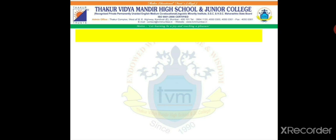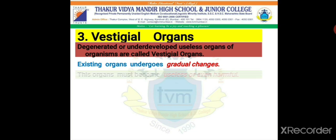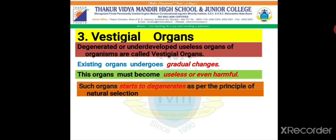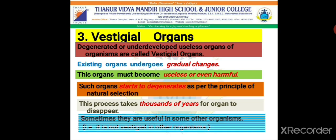The third proof is regarding vestigial organs. What are vestigial organs? Degenerated or underdeveloped, useless organs of organisms are called vestigial organs. These are existing organs which undergo gradual changes — they become useless or even harmful. Such organs start to degenerate as per the principle of natural selection. This process takes thousands of years for the organs to disappear, and such organs are called vestigial organs.